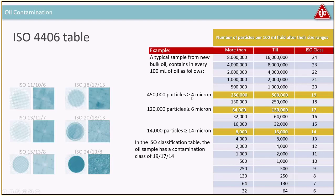As an example using new oil from a drum: 450,000 particles ≥4 microns, 120,000 ≥6 microns, and 14,000 ≥14 microns. Moving these numbers into the ISO 4406 table: 450,000 is between 250,000 and 500,000 — class 19. 120,000 is between 64,000 and 130,000 — class 17. 14,000 is between 8,000 and 16,000 — class 14. So instead of listing all those numbers, I say ISO code 19/17/14, meaning a maximum of half a million particles per 100 mL at ≥4 microns.